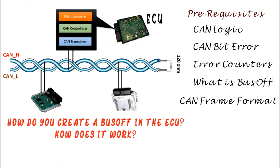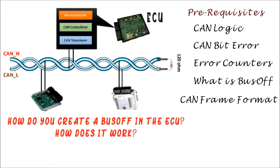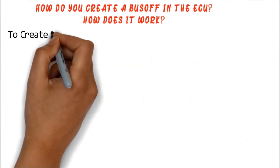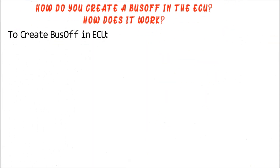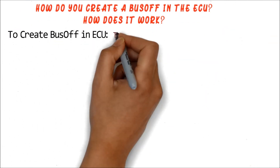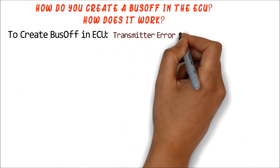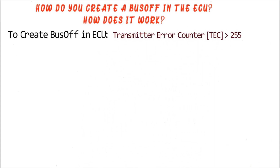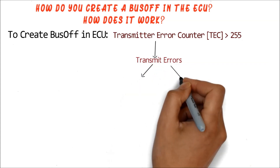Let us walk through this scenario. In order to create the bus-off in an ECU, you need the Transmit Error Counter value to cross 255. When TEC crosses 255, the ECU will enter bus-off. TEC will increment upon transmit errors. Now, in CAN protocol, there are two transmit errors.